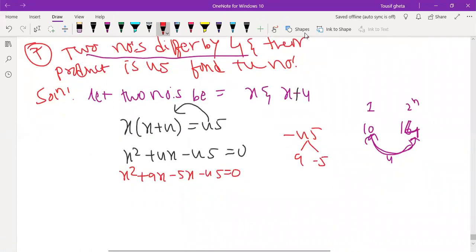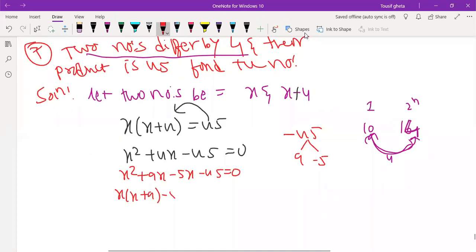You will get the answer as x of x plus 9 minus 5 of x plus 9. x is equal to 5 and x is equal to minus 9.